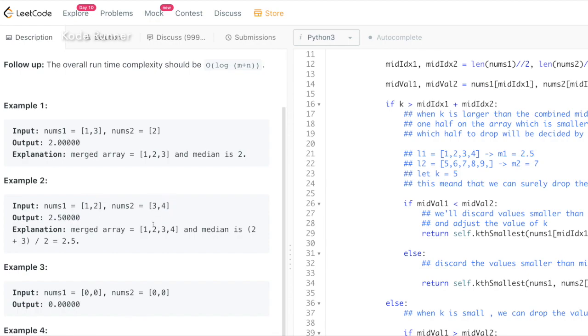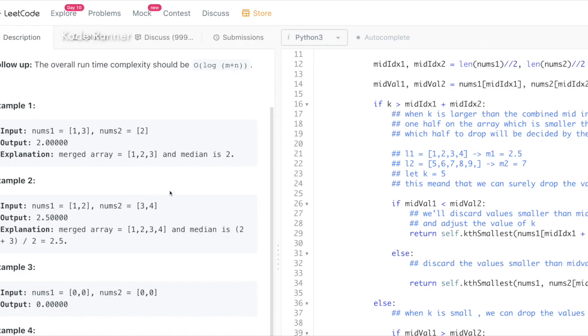3 and 4. As the size of the combined array is even, the median of the combined array is 2 plus 3 divided by 2 which is 2.5.